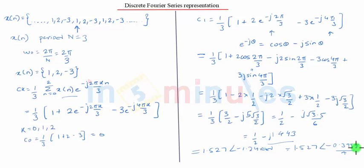Remember, this should be a multiple of π. This can be easily obtained as 1.24 divided by π into π, that results into 0.395 into π. So after this, we can write this as 1.527 e raised to minus j 0.395 π.